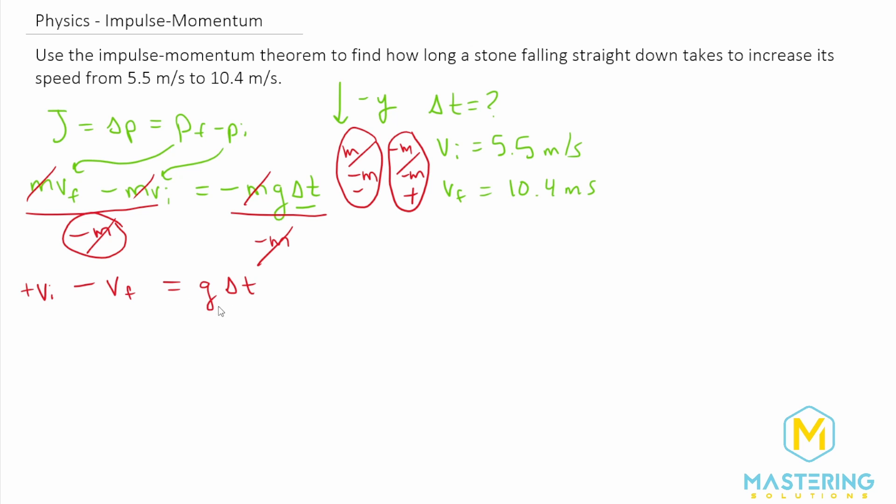And so if we isolate delta t, that goes away. And we're left with the change in time is going to be equal to the initial velocity minus the final velocity all divided by gravity.